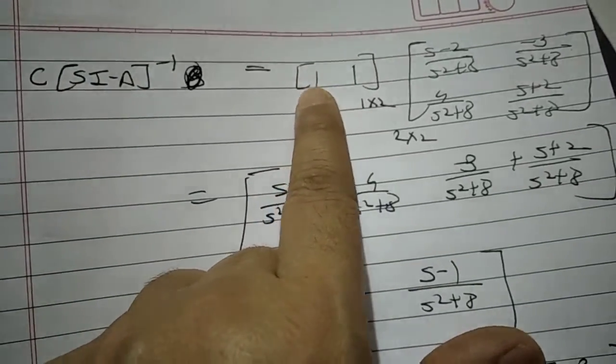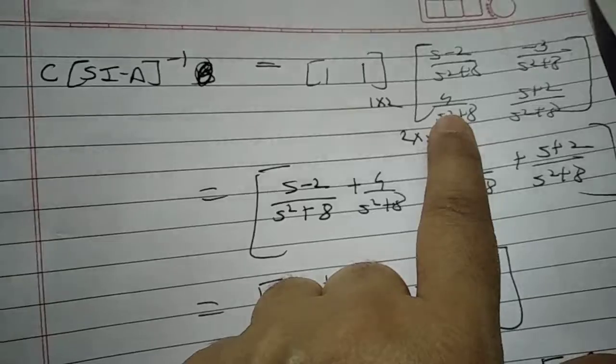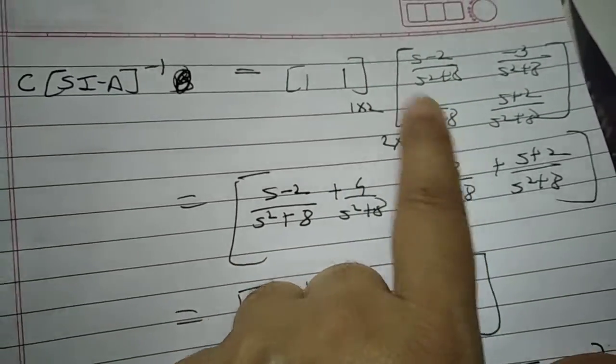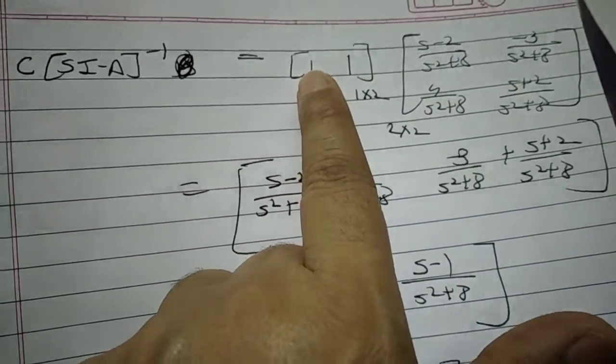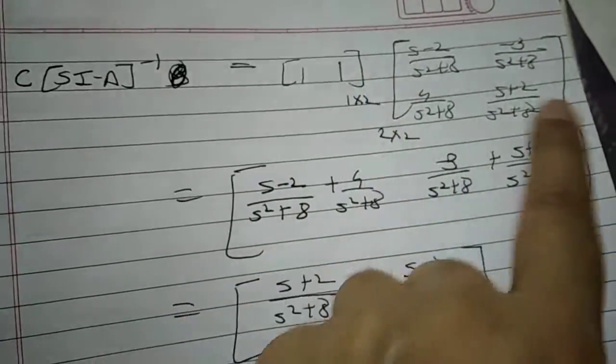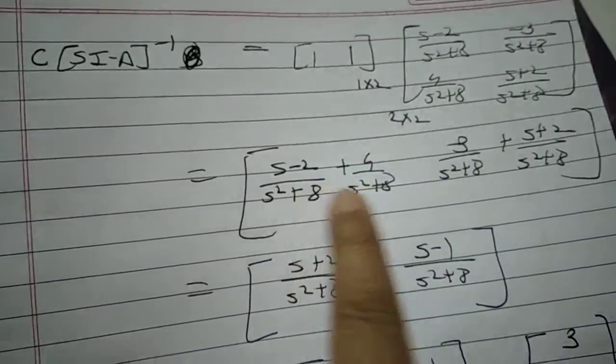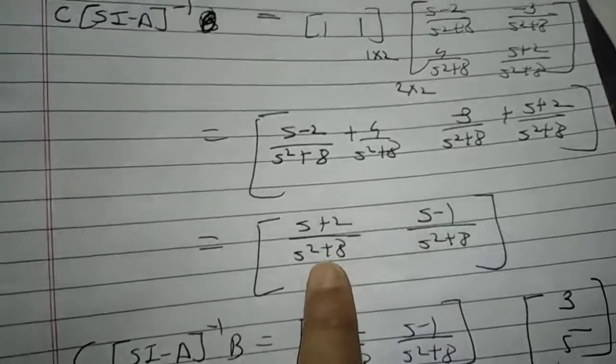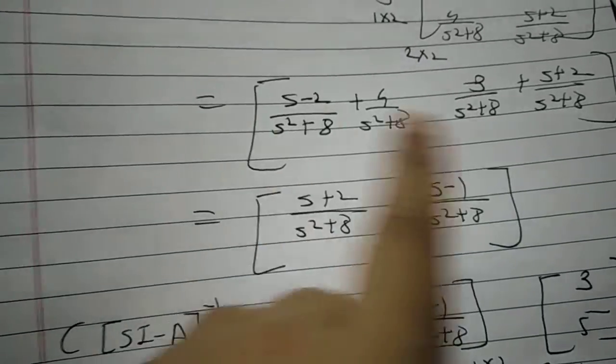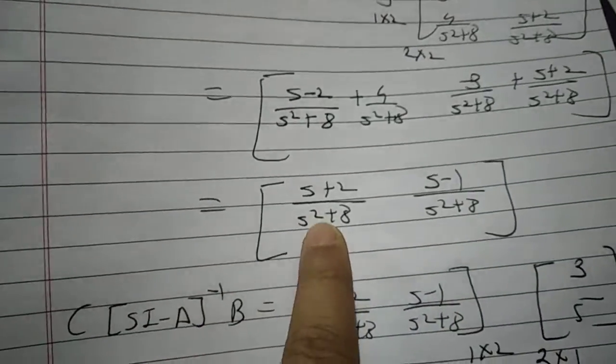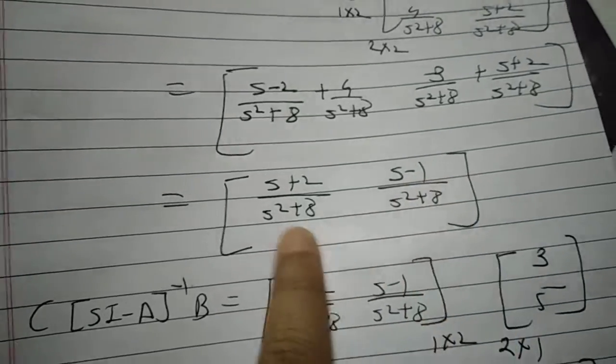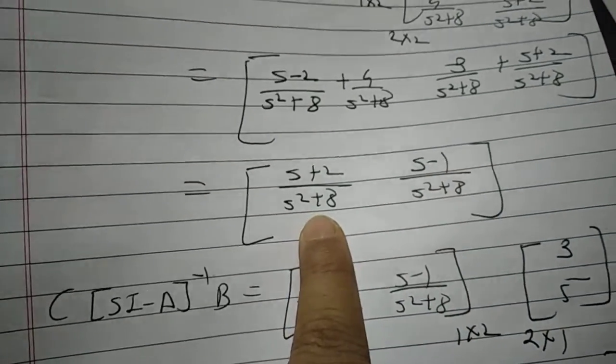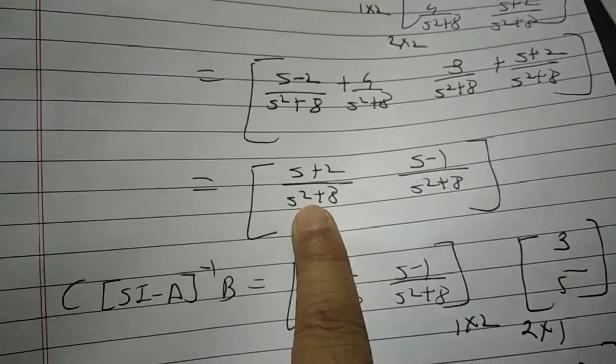So how to do multiplication? This row, this column. So 1 into this plus 1 into this. Second column is 1 into this, 1 into this. So you get this one and this one. Denominator is same. So you will get this one, S plus 2 squared plus 8. So you have got 2 columns and 1 row.